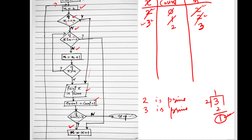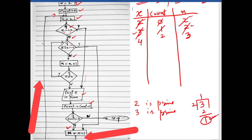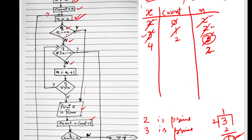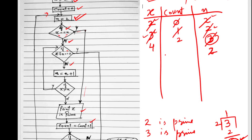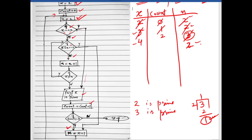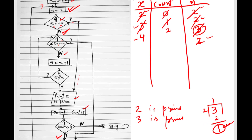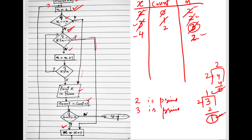Count is incremented to 2. I check if count is less than or equal to 10 — yes it is, so x is incremented to 4. N is re-initialized to 2. In the decision box, x does not equal n. I check x % n: 4 % 2 gives a remainder of 0.